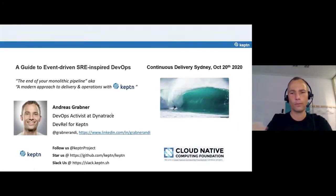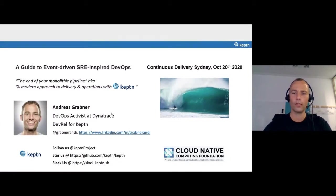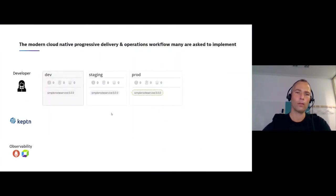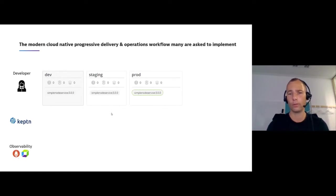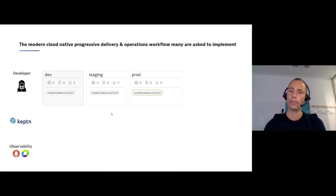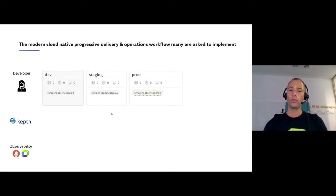I'm interested in the current state of continuous delivery within your organization. This is a continuous delivery meetup, so I assume you're hopefully already on your journey. This is one of the views from the Keptn team, and I'm sure from other tool vendors in the space as well — they basically tell you this is the modern way of doing continuous delivery or progressive delivery, including operational workflows, because delivery is not everything. Once we deliver something in production, you want to make sure the system stays healthy.